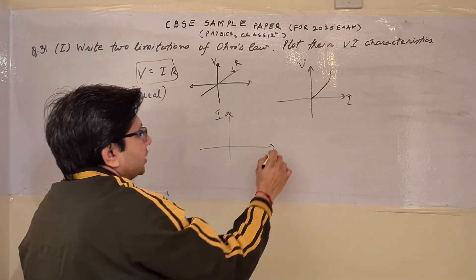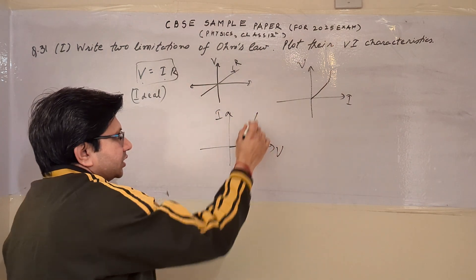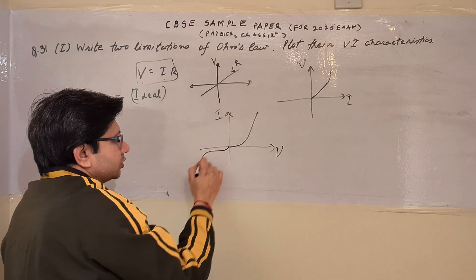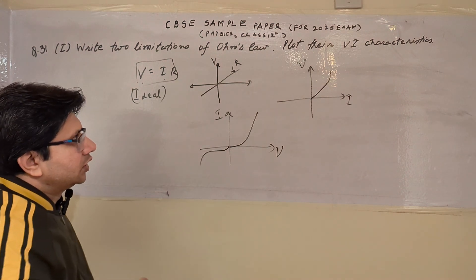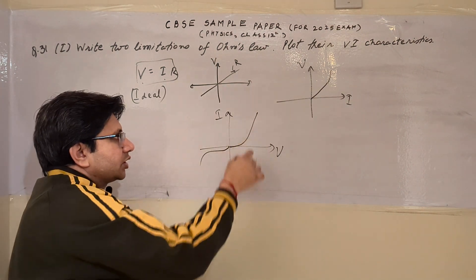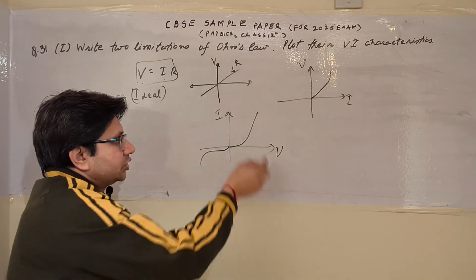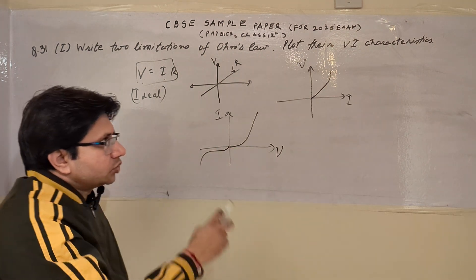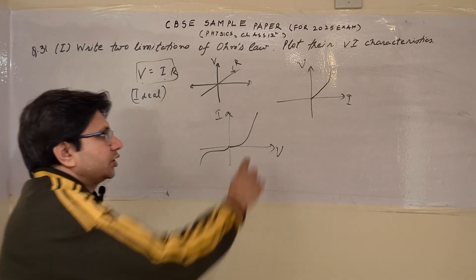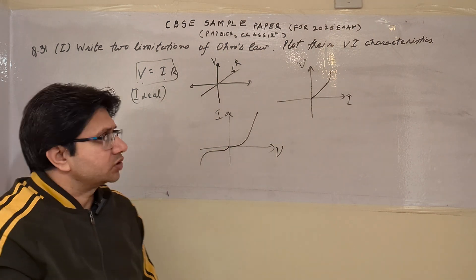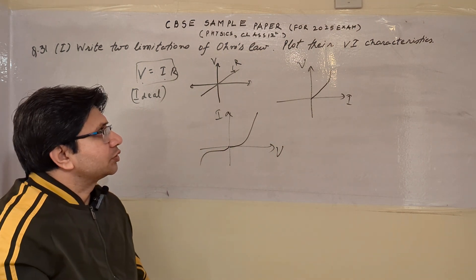Particularly in the diode case, we see that in forward bias we see a certain graph, and in reverse bias we see a different graph. So the relationship between voltage and current changes with polarity change. This is another reason and we can show the corresponding graph. I hope you have understood the solution.